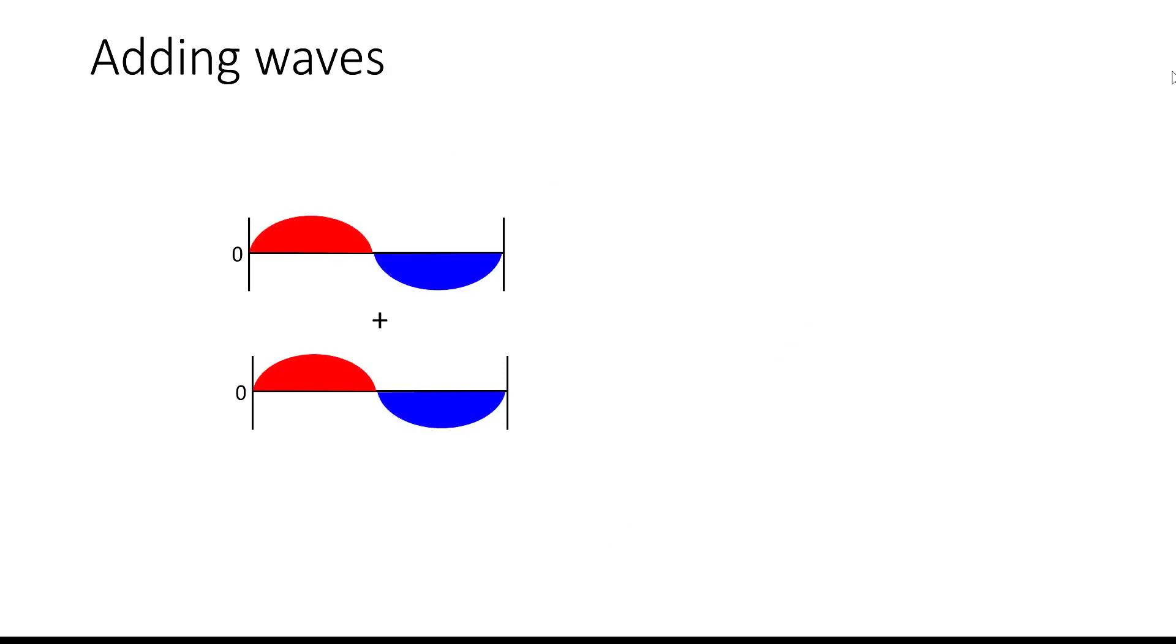So we're going to start with two waves that are in phase with each other, meaning that their positives and their negatives are in the same spatial region. And we're going to add them together spatially. And what we're going to get is a similar wave, but whose amplitude is twice as high.